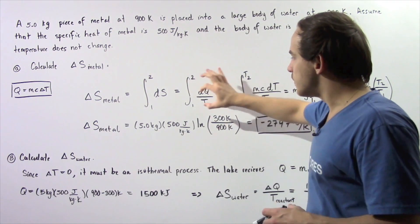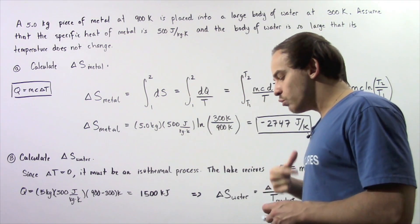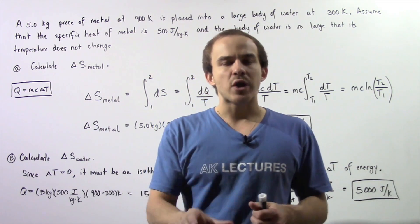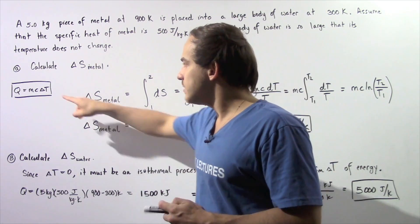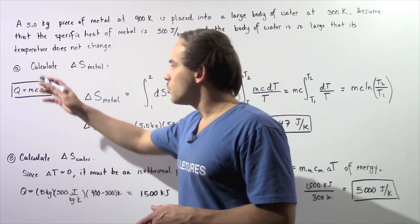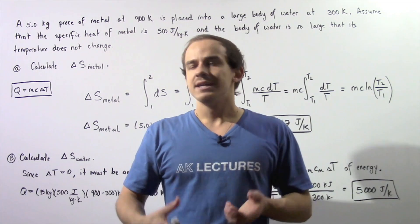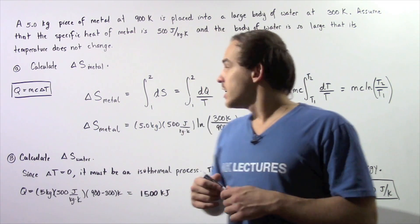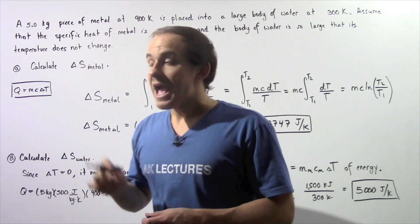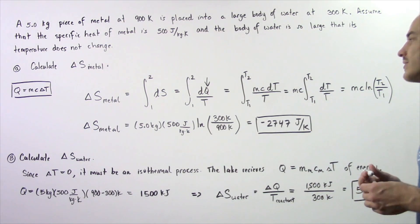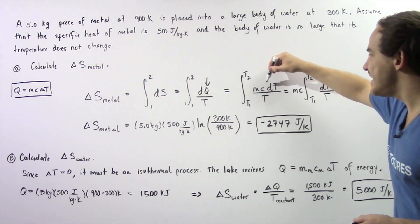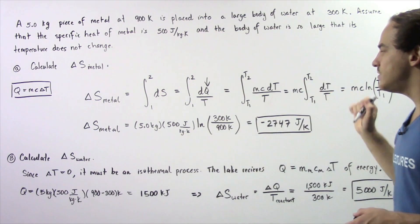We're integrating from state 1 to state 2. Q is simply equal to this quantity, so we want to calculate how much energy is transferred out of our metal. We use the following equation from calorimetry: Q equals mass times specific heat multiplied by change in T. We replace Q with this entire equation and integrate with respect to temperature — taking the integral of mC·dT divided by T from T1 to T2.